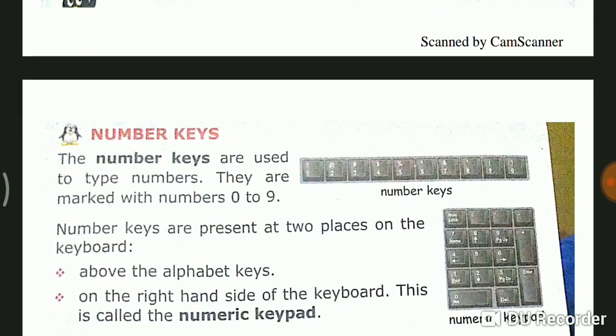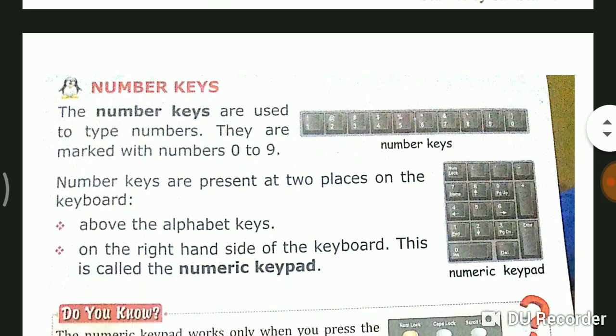Then comes the number keys. Number keys are used to type numbers. They are marked with numbers 0 to 9. You can see this. They are marked with 0 to 9. Number keys are present at two places on the keyboard. Number keys are two types: one is horizontal and one is keypad, like above alphabet keys and on the right-hand side of the keyboard.